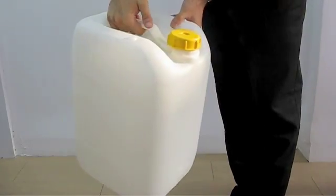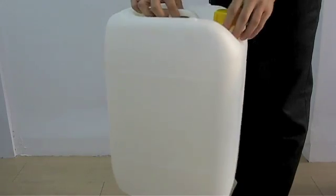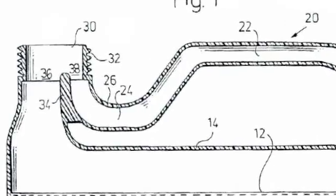The container I'm holding might look like a regular one, but in fact the handlebar of this no-glug container has an air duct that allows air to pass into the container when pouring liquids out.